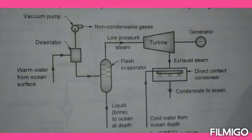There are two types of Ocean Thermal Energy Conversion plants. One is the open cycle system, also called the Claude cycle, and the other is the closed cycle system, called the Anderson cycle. We will now study the open cycle system.